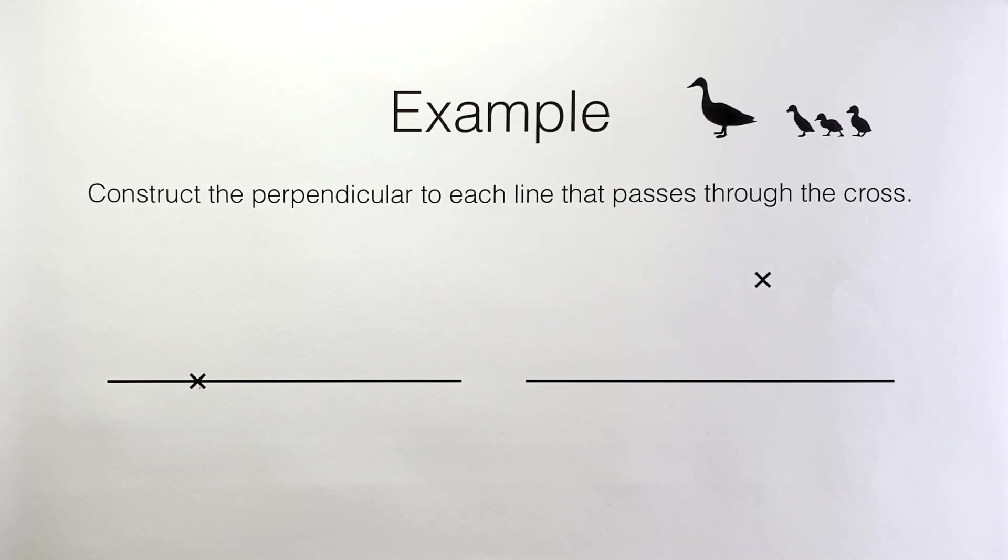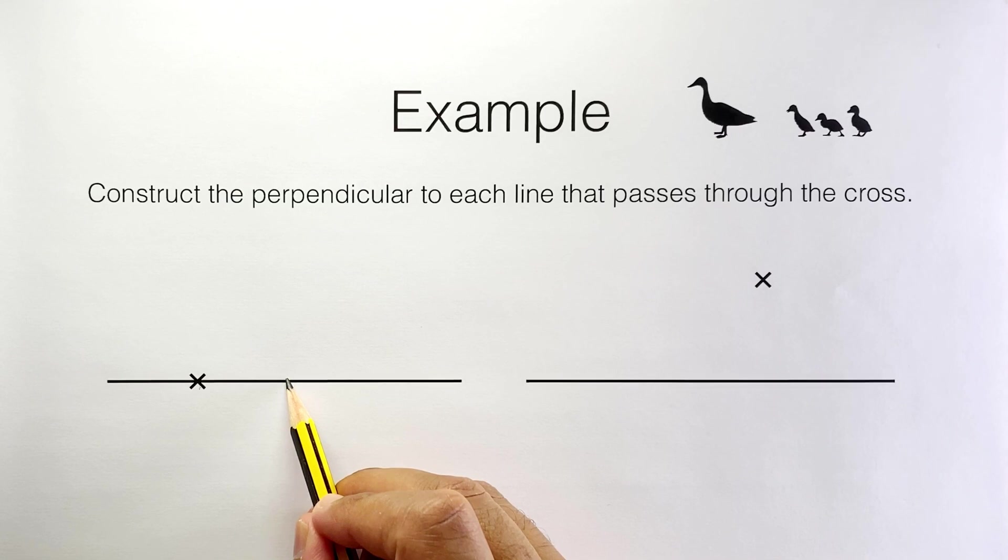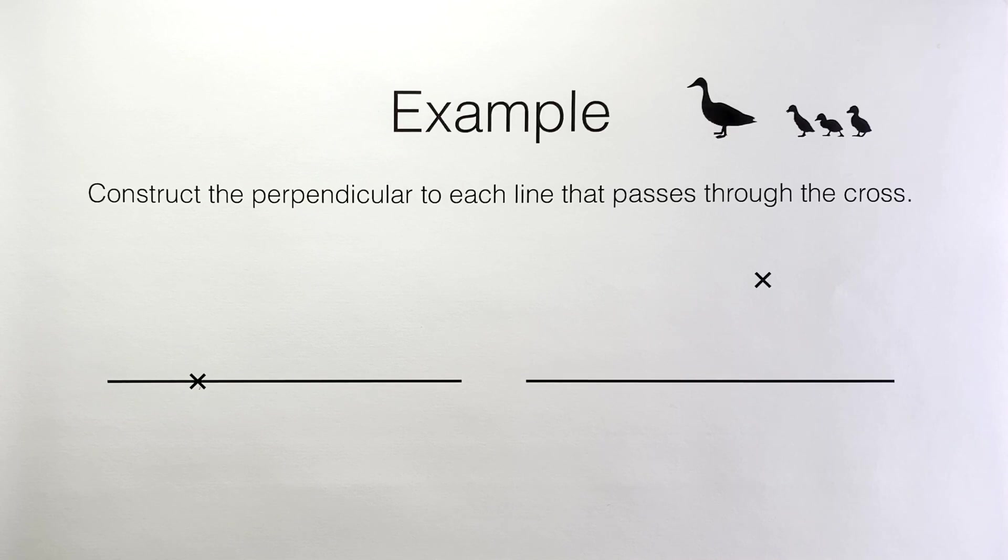So we don't want to construct the perpendicular bisector of this line segment. That would give us a perpendicular line to this, but it would go through the middle somewhere around here. What we need to do is turn this problem into a perpendicular bisector problem.